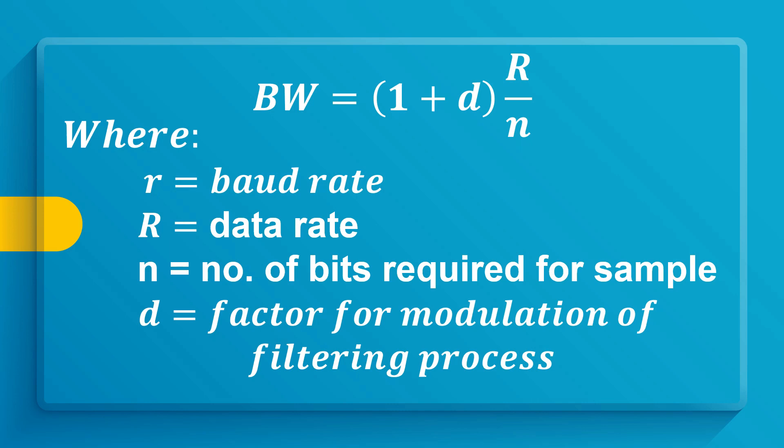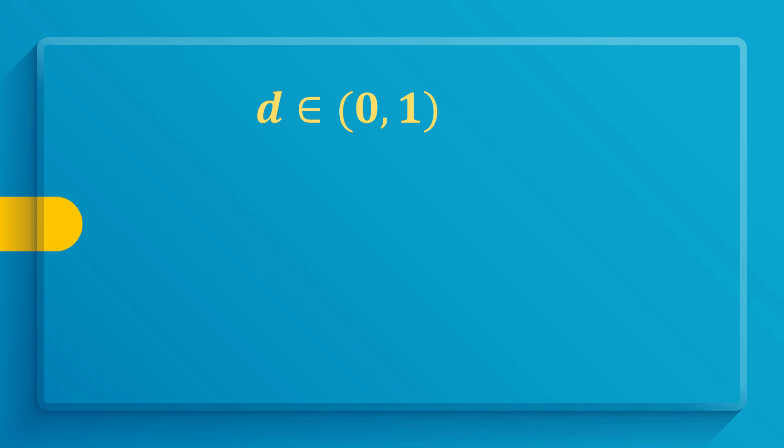For small r, it equals baud rate, and big letter R equals data rate. While n equals number of bits required. And d equals the factor for modulation or filtering process. While for the range of d, d is either 0 or 1.